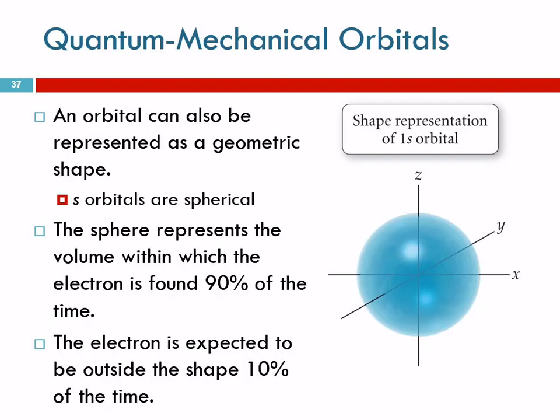We can also represent it as a geometrical shape. It's spherical. It's important to understand that it is not a round container that the electron is confined to. But this is the general shape of the orbital. S orbitals are spherical. S does not stand for spherical. It stands for sharp. But s and spherical go together, so use it if you like it.